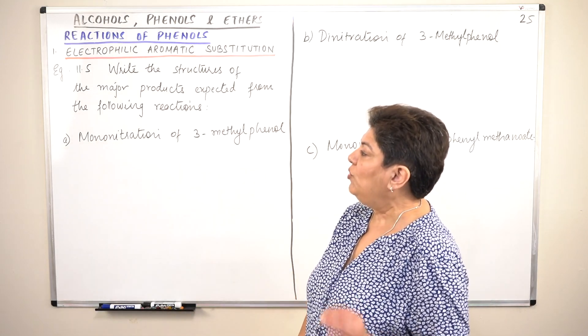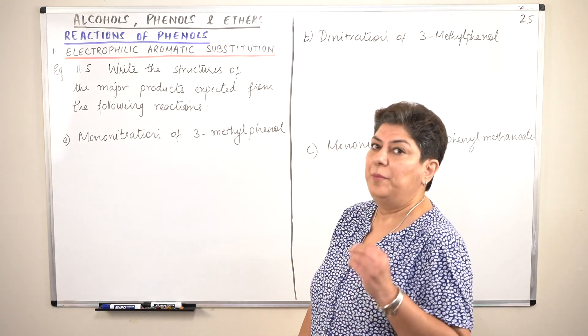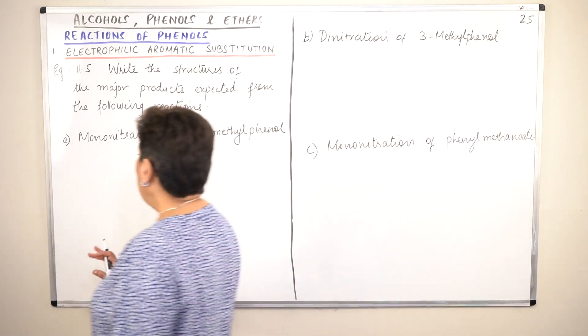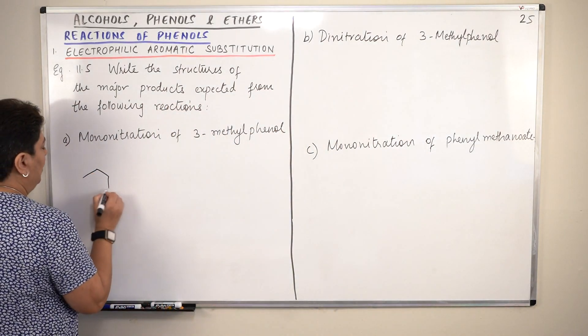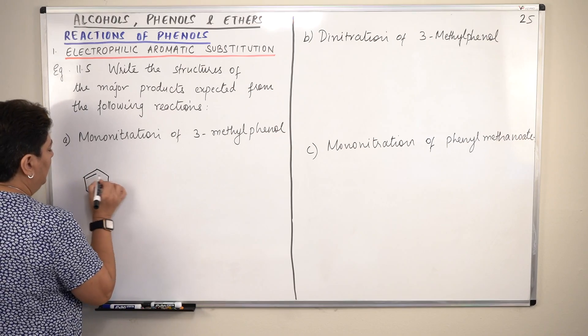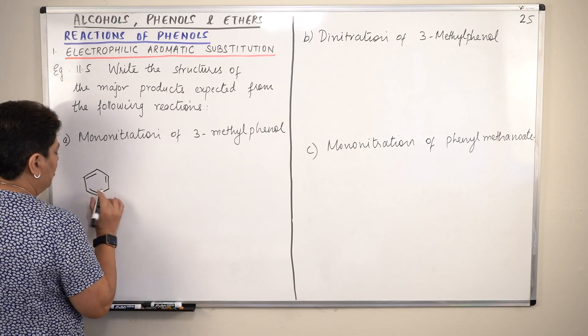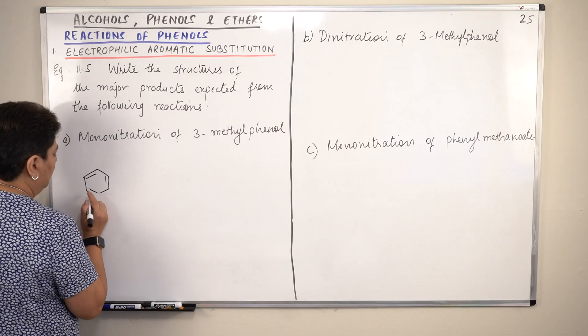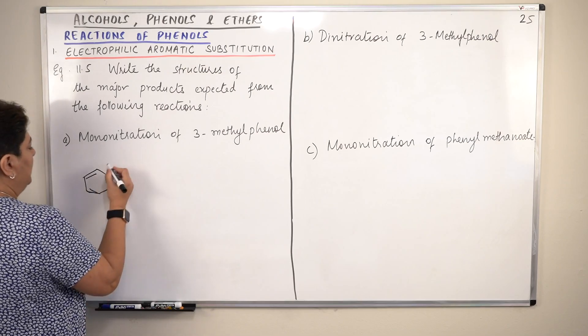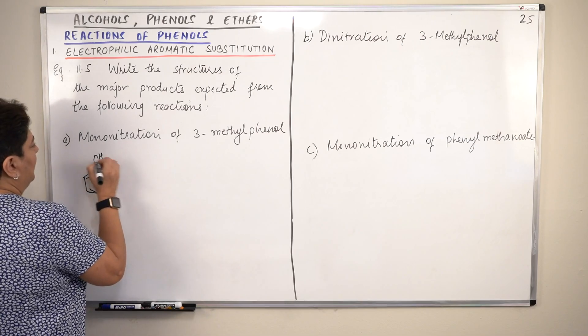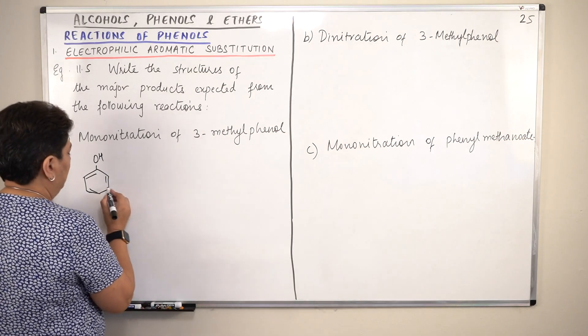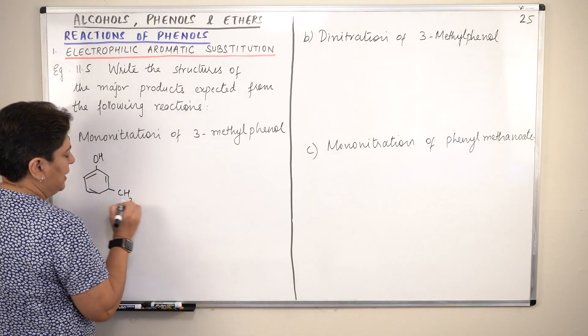The first is mononitration of 3-methylphenol. Mononitration. First of all, this is phenol. We make the structure of phenol, OH. 3-methyl on the third carbon, methyl group is attached.